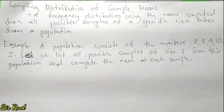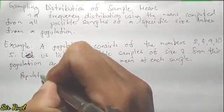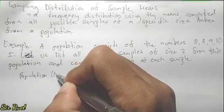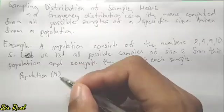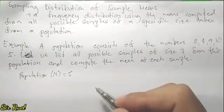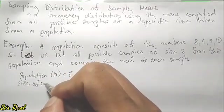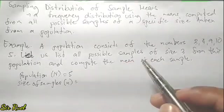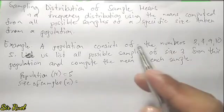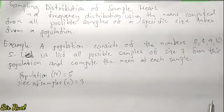First, let's understand how many numbers are in the given population. Our big letter N — we have 1, 2, 3, 4, and 5, so we have a population of N = 5. The sample size, or small letter n, is equal to 3, as stated: possible samples of size 3. So those are our given values.